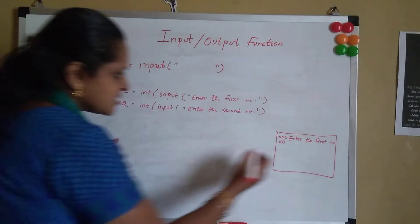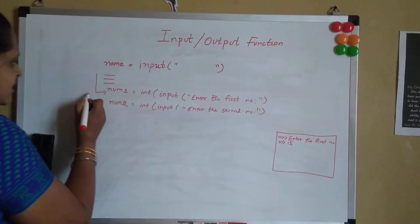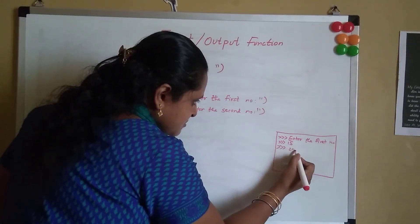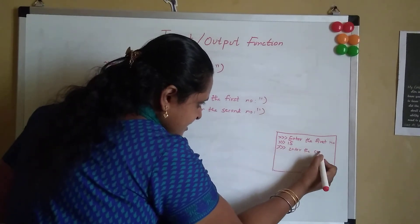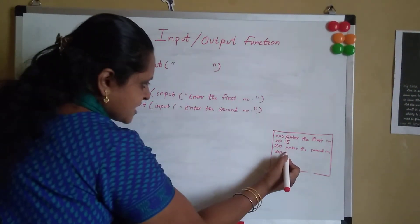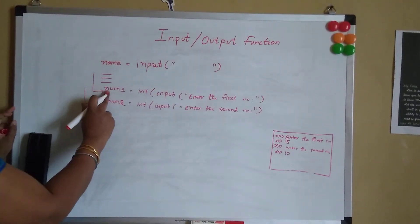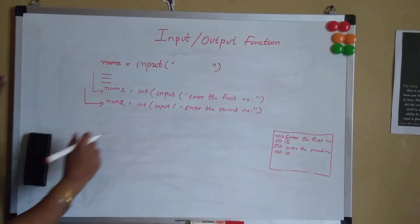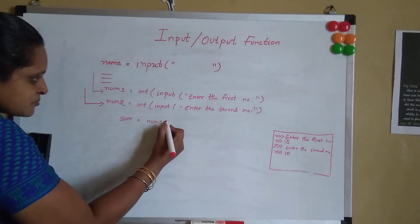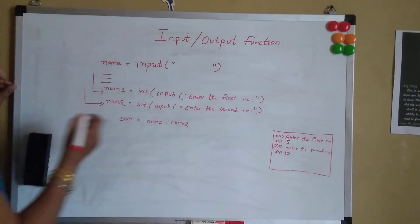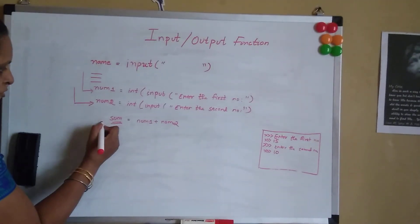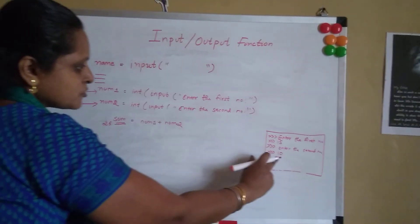Suppose I enter 15 as the first number. Then it asks for the second number and if the user inputs 10, num1 will have the value 15 and num2 will have the value 10. Now we can do the addition: sum = num1 + num2. It will compute 15 + 10 = 25, so sum will hold the value 25.